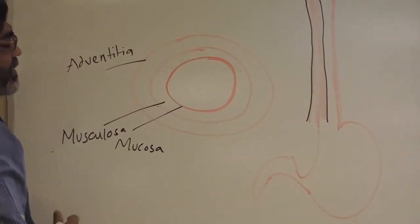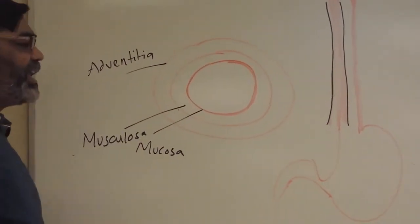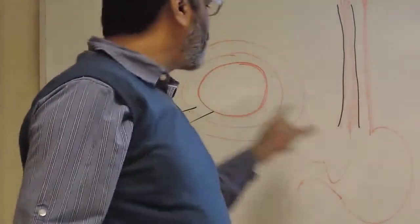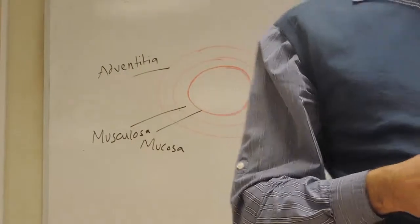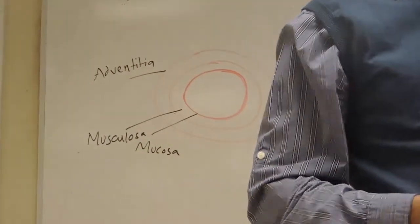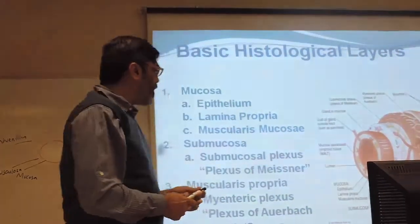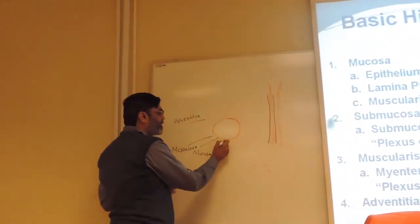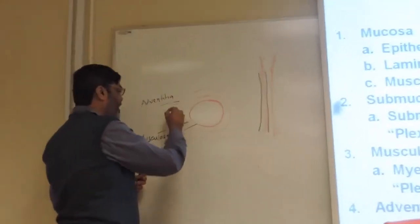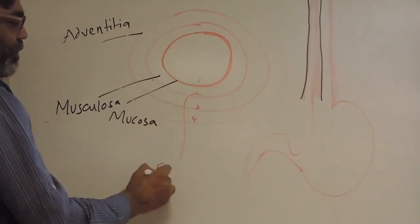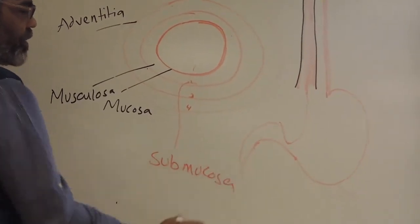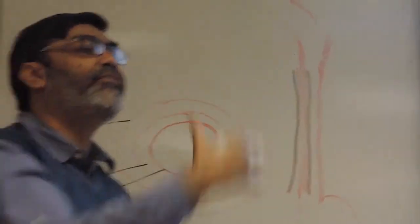We have three layers — three tubes one over the other. Between these layers some other structures are present, but this structure persists from the esophagus all the way up to the anal canal. The most inner layer is mucosa, outside mucosa is a thick layer of muscle called musculosa, and outside the muscle is a layer called adventitia — a layer of connective tissue. Sometimes between mucosa and musculosa we also have submucosa.